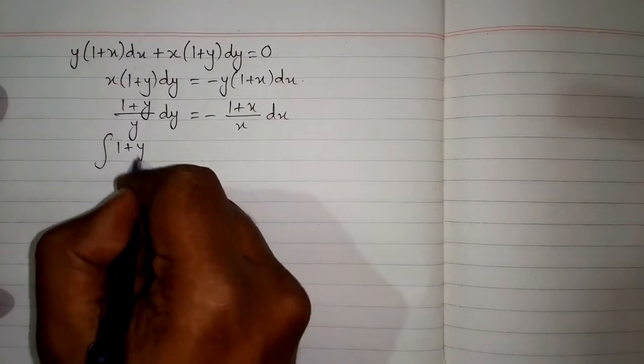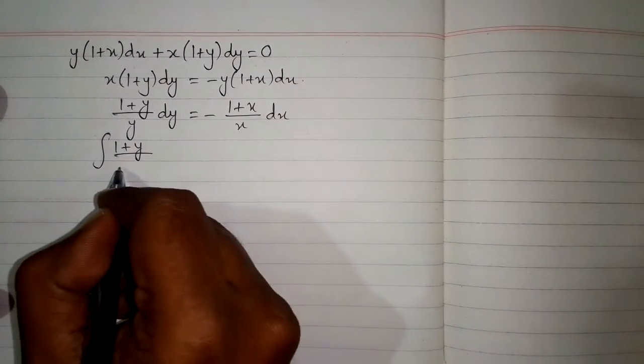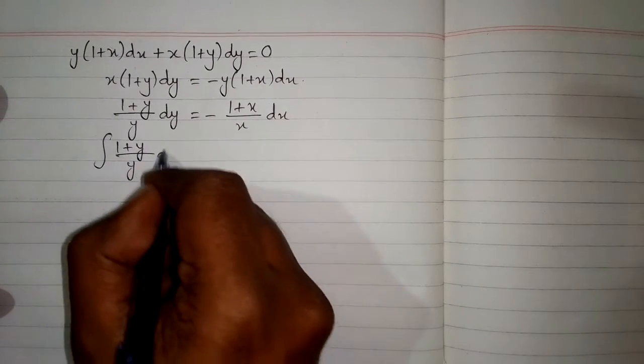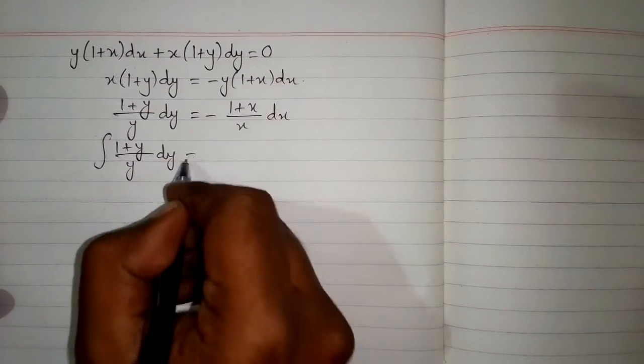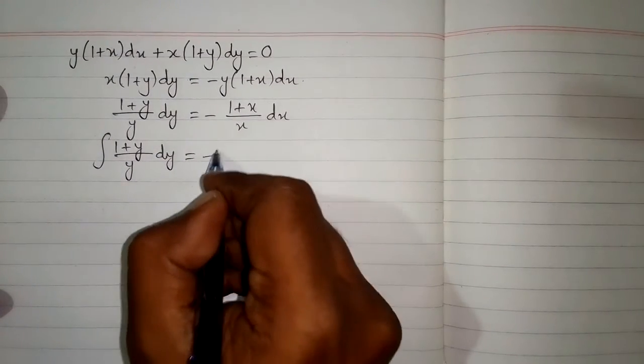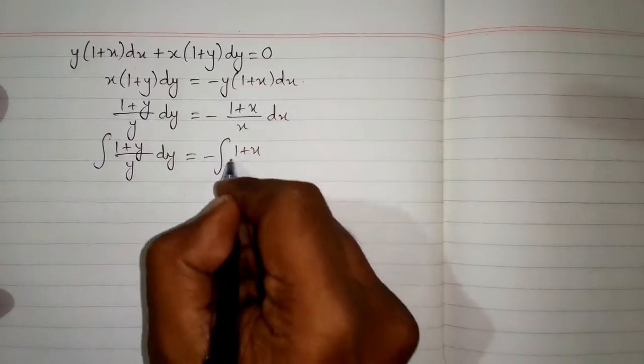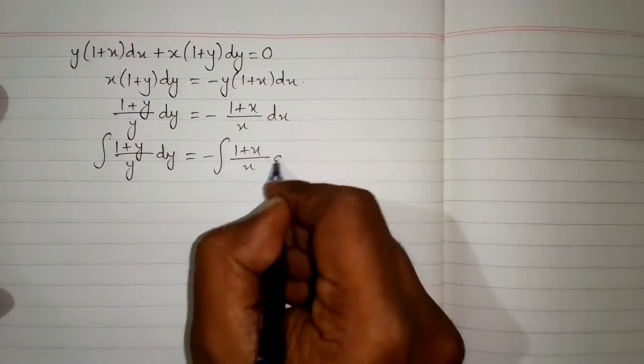So we have the integral of (1 plus y) upon y dy is equal to minus the integral of (1 plus x) upon x dx.